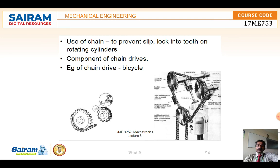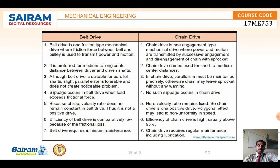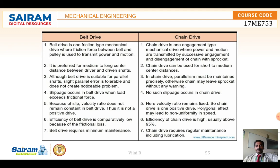Chain drives use interlinking of sprockets and chains, seen commonly in bicycles where motion transfers from one sprocket to the wheel sprocket. Unlike belt drives which are friction-based, chain drives are engagement-type and prevent slipping. Belt drives work over medium to long distances, while chain drives are suited for short to medium distances. Both require parallel shafts, but chain drives are much less tolerant of misalignment than belt drives.